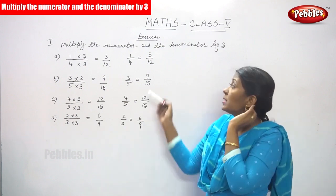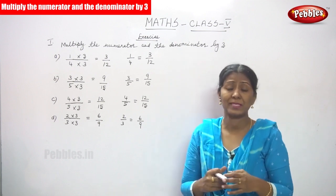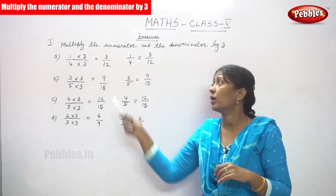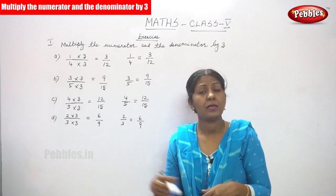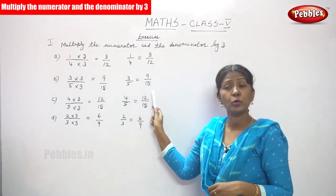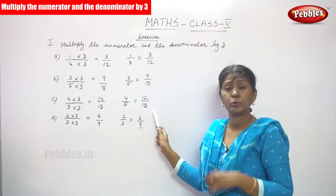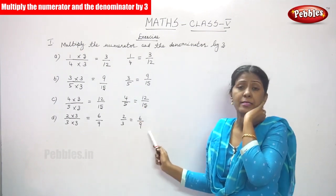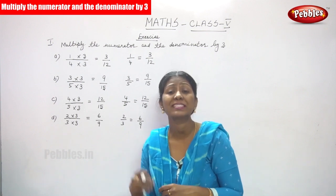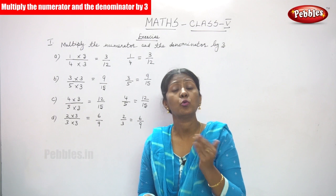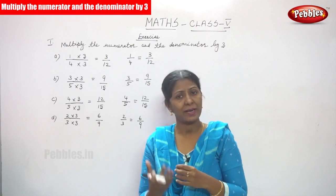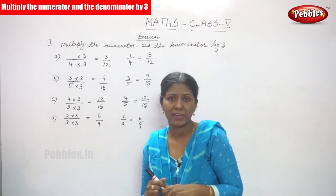How could you get the answer? Because the common multiple — the common multiple is 3. You have to multiply the numerator and the denominator by 3, and you can get this answer. Suppose they don't mention the common multiple — you have to find out the common multiple yourself and make it an equivalent fraction like this.